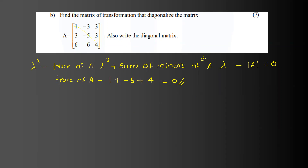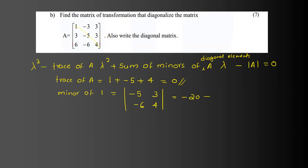Now we compute the minors of the diagonal elements. For the first diagonal element (1), we cancel the first row and first column. The minor is the determinant of [[-5, 3], [-6, 4]], which equals -20 minus (-18), that is -20 plus 18, equal to -2.